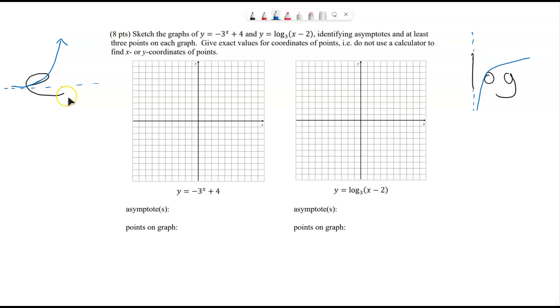How you find the horizontal asymptote of an exponential is the constant term, y equals 4. So the asymptote, y equals 4.